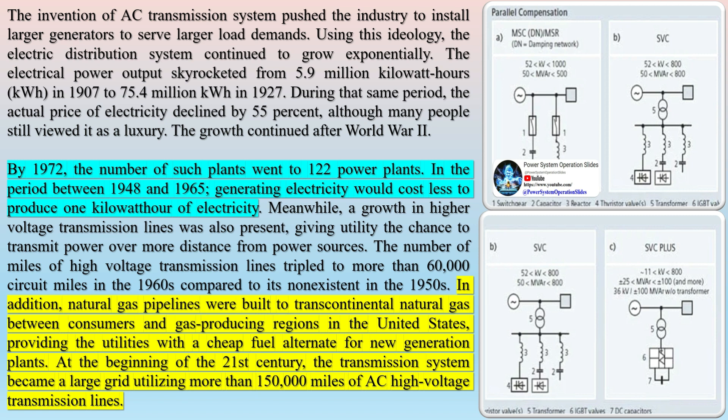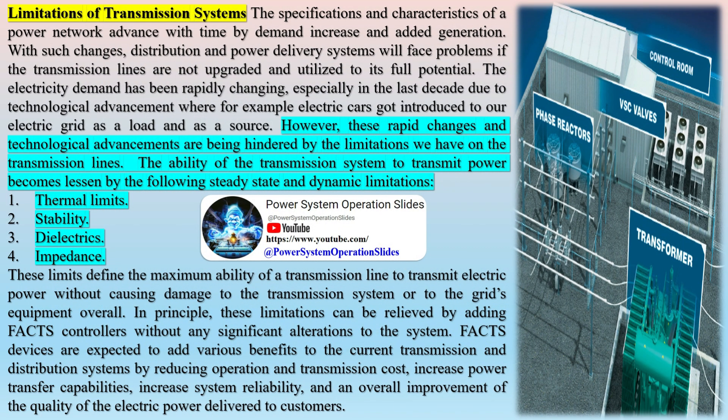The invention of the AC transmission system pushed the industry to install larger generators to serve larger load demands. Using this ideology, the electric distribution system continued to grow exponentially. The electrical power output skyrocketed from 5.9 million kilowatt hours in 1907 to 75.4 million kilowatt hours in 1927. During that same period, the actual price of electricity declined by 55 percent.